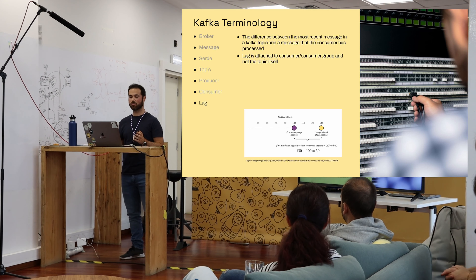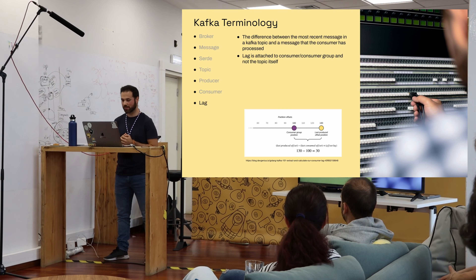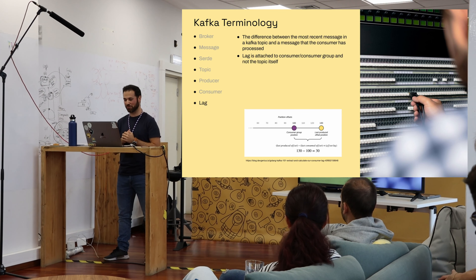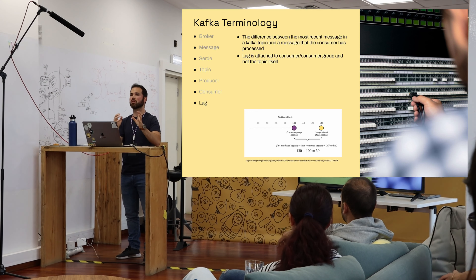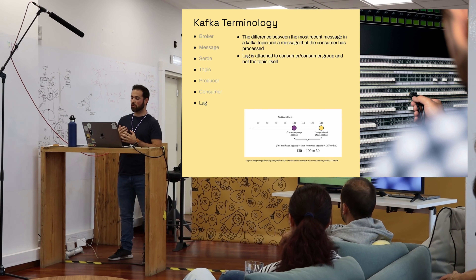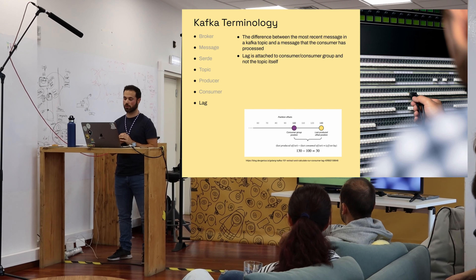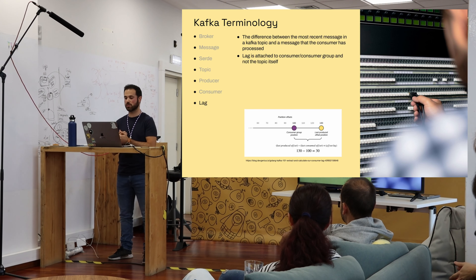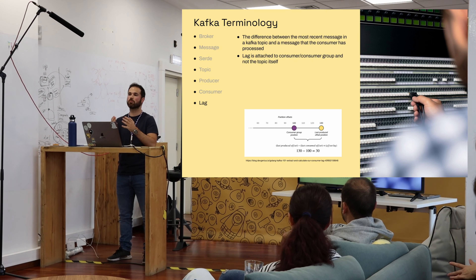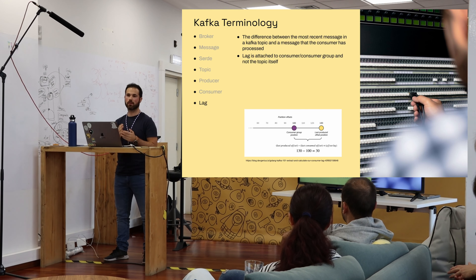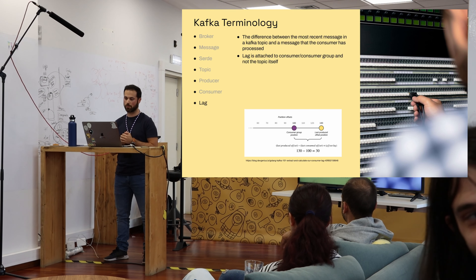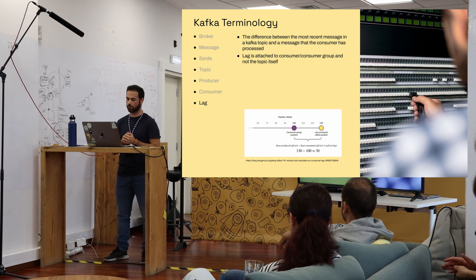Now let's talk about lag. When you have lag, something is wrong. Lag is always tied to a partition and a consumer group. If your consumer group is at offset 100 on a partition but the last produced message is at offset 130, your lag is 30 — meaning it's missing 30 messages to process. Less lag means your application is more performant and has less delay when processing messages.